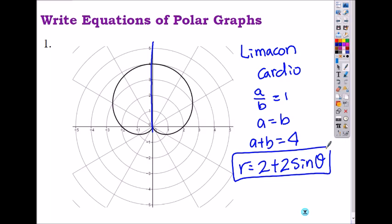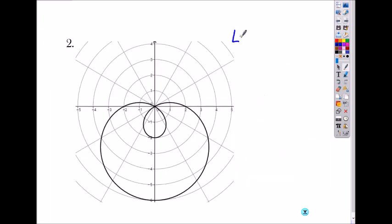Number two. This is a Limason with what? Inner loop. Inner loop. And it's reflected on the pole, so it is negative sine, right? So what's the difference? So for this one, A must be less than B.